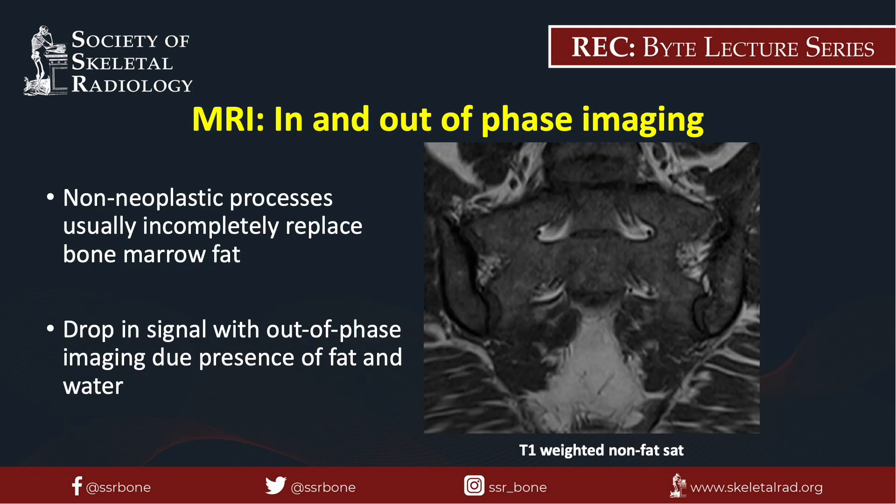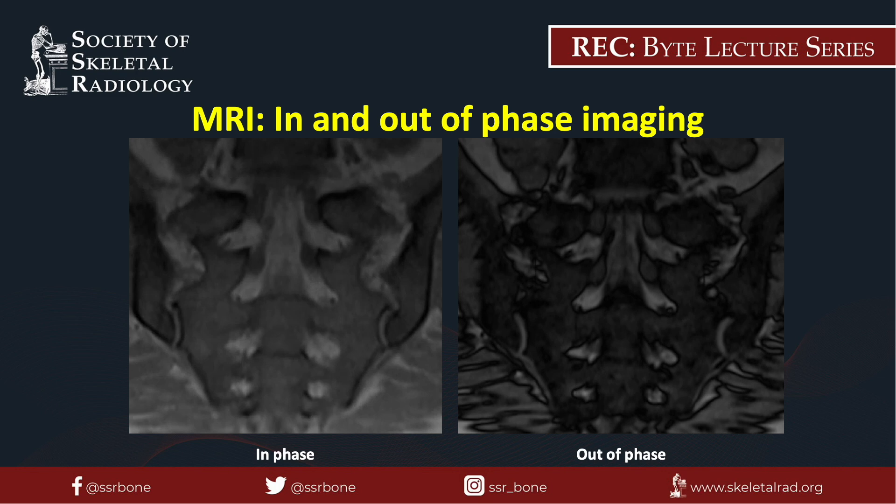In this MRI of the sacrum, the bone marrow is diffusely heterogeneous on a T1-weighted image and appears isointense to muscles, which may suggest red marrow reconversion or a pathologic bone marrow replacement process. There is a clear drop of signal on the out-of-phase image relative to the in-phase image, confirming the presence of intravoxel fat. As such, this patient likely has pronounced red marrow.